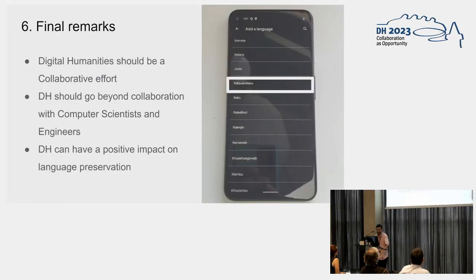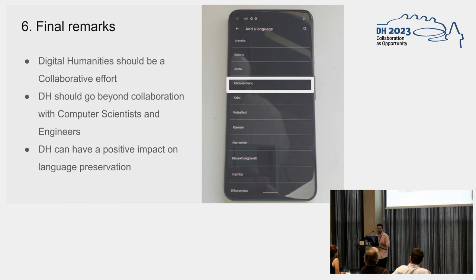Some final remarks: digital humanities should be a collaborative effort — not only with engineers or other humanists, but also with students. DH can have a positive impact on language preservation. The database was linked to Wikidata, and for example Google uses data from Wikidata for language in the phone. Cape Verdean, which is the creole from Cape Verde, now appears on the menu of language selection in smartphones.